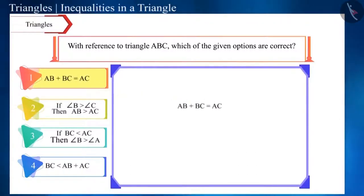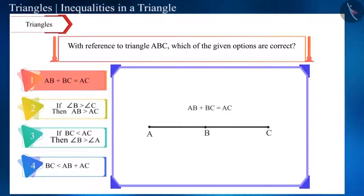In the first option, if the sum of AB and BC is equal to AC, it will form a line and not a triangle. This means that this option is incorrect.